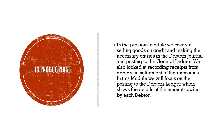In a previous module we covered selling goods on credit and making the necessary entries in the debtors journal and posting to the general ledger. We also looked at recording receipts from debtors in the cash receipts journal in the settlement of their accounts. In this module we will focus on posting to a debtors ledger, which shows the details of the amounts owing by each debtor.